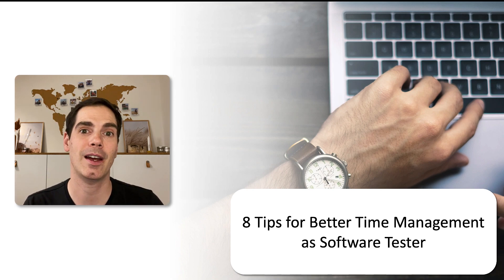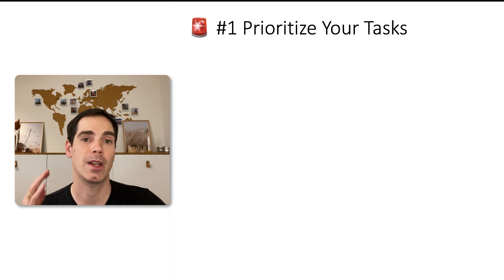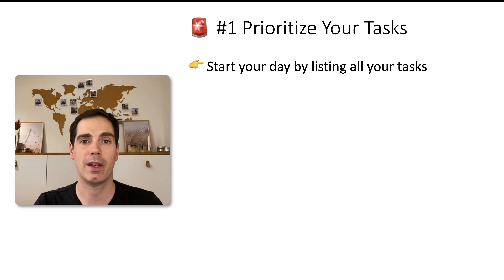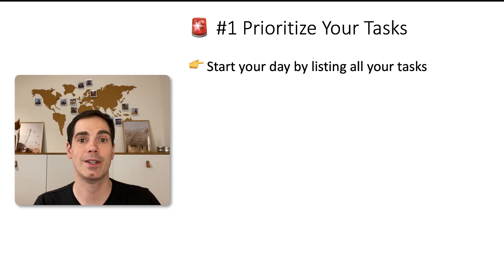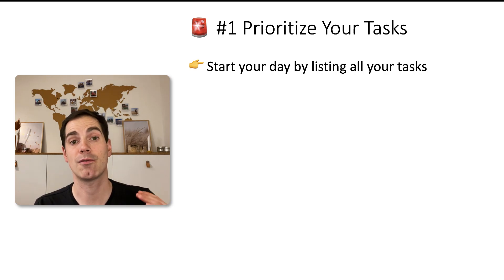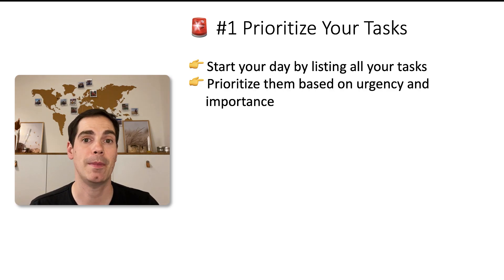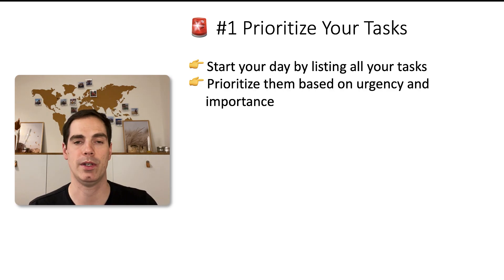So what are the eight tips I brought for you today? The first one — and I think it's a no-brainer — is to prioritize your tasks. You should start your daily work by listing all the tasks you'd like to work on that day. Use a pen and paper, some digital device, or type it in a notepad — however you like it. Really prioritize your tasks and write out everything you'd like to do on that single day. Of course, prioritize them based on urgency and priority, which highly depends on your project, what you're currently working on, and the status.